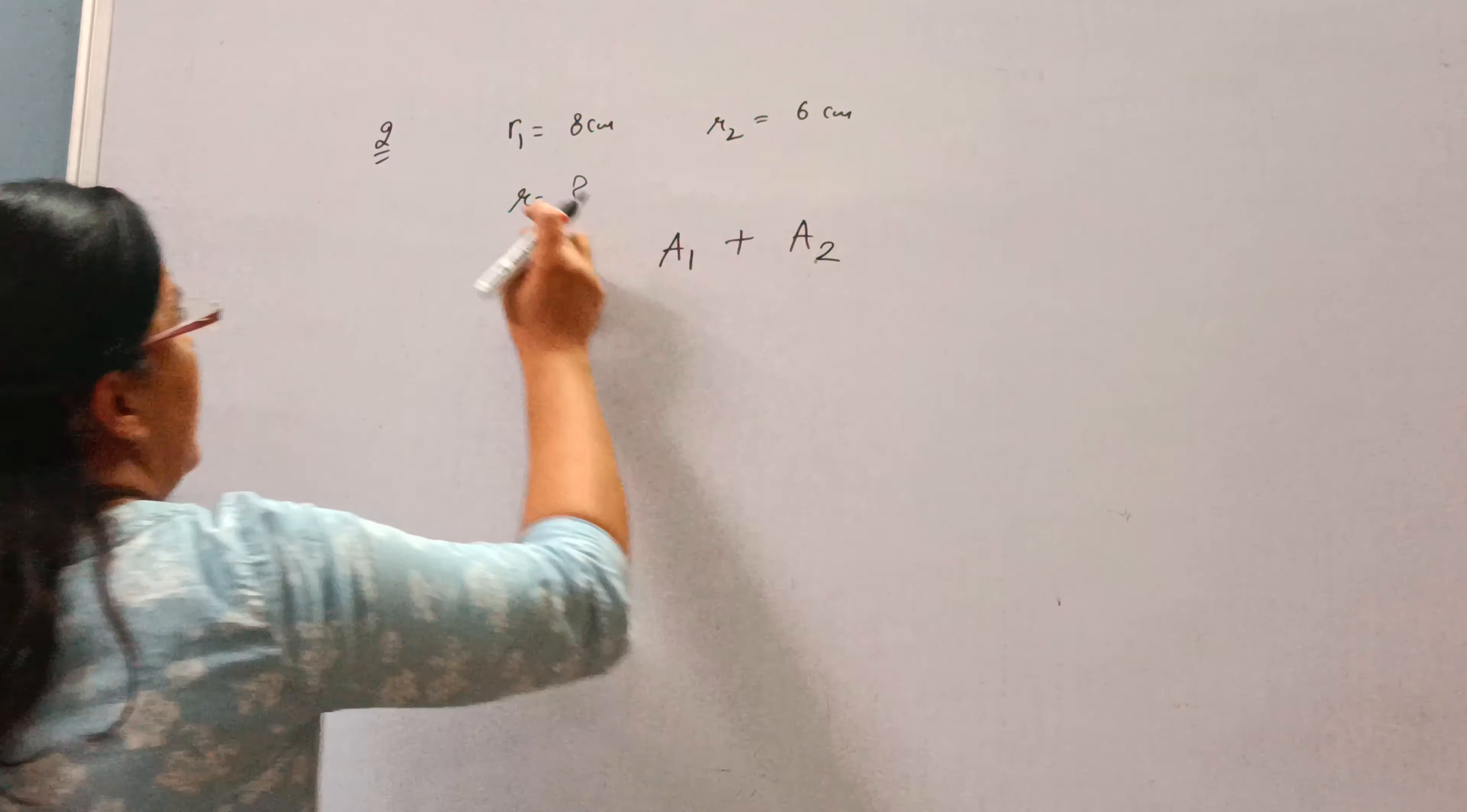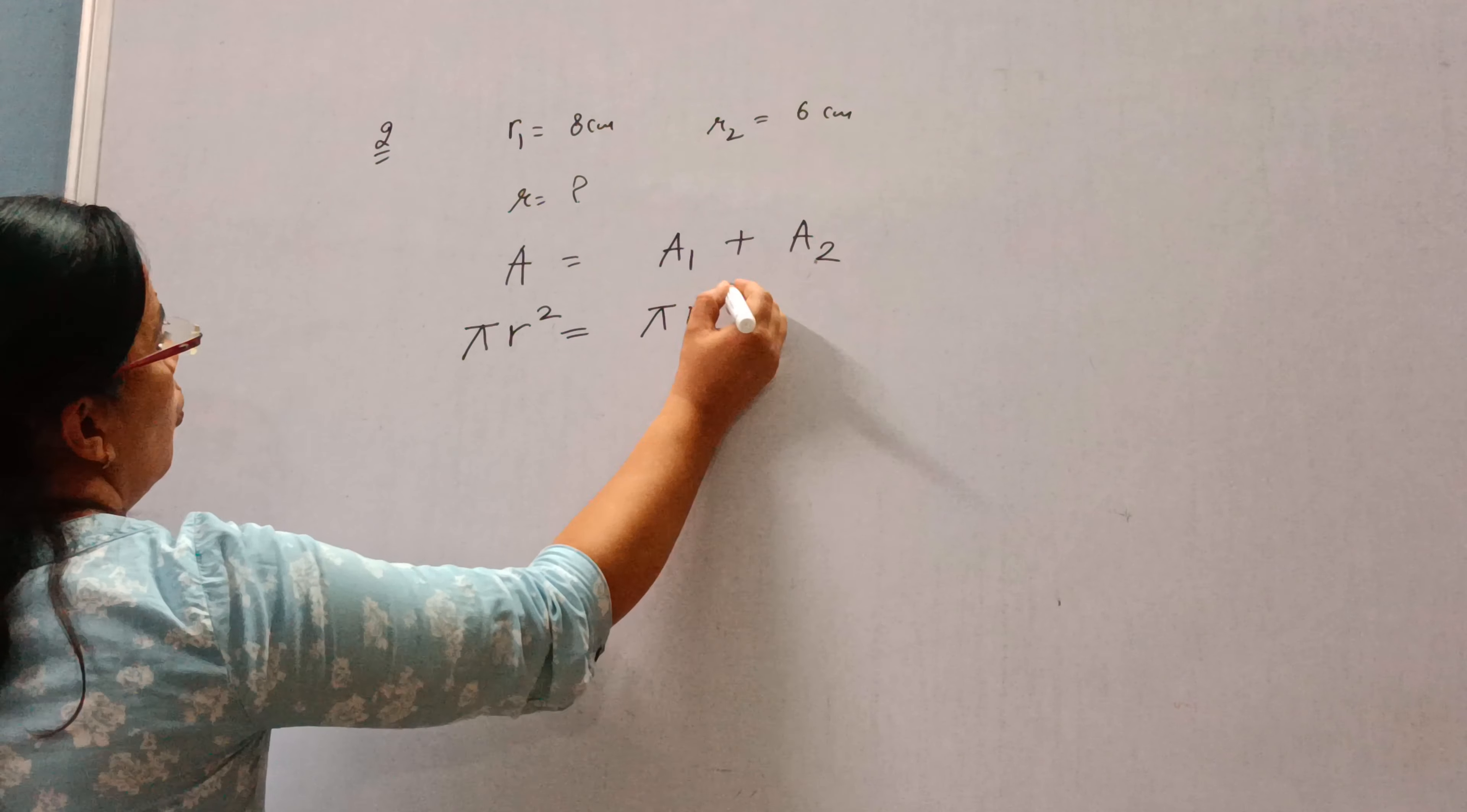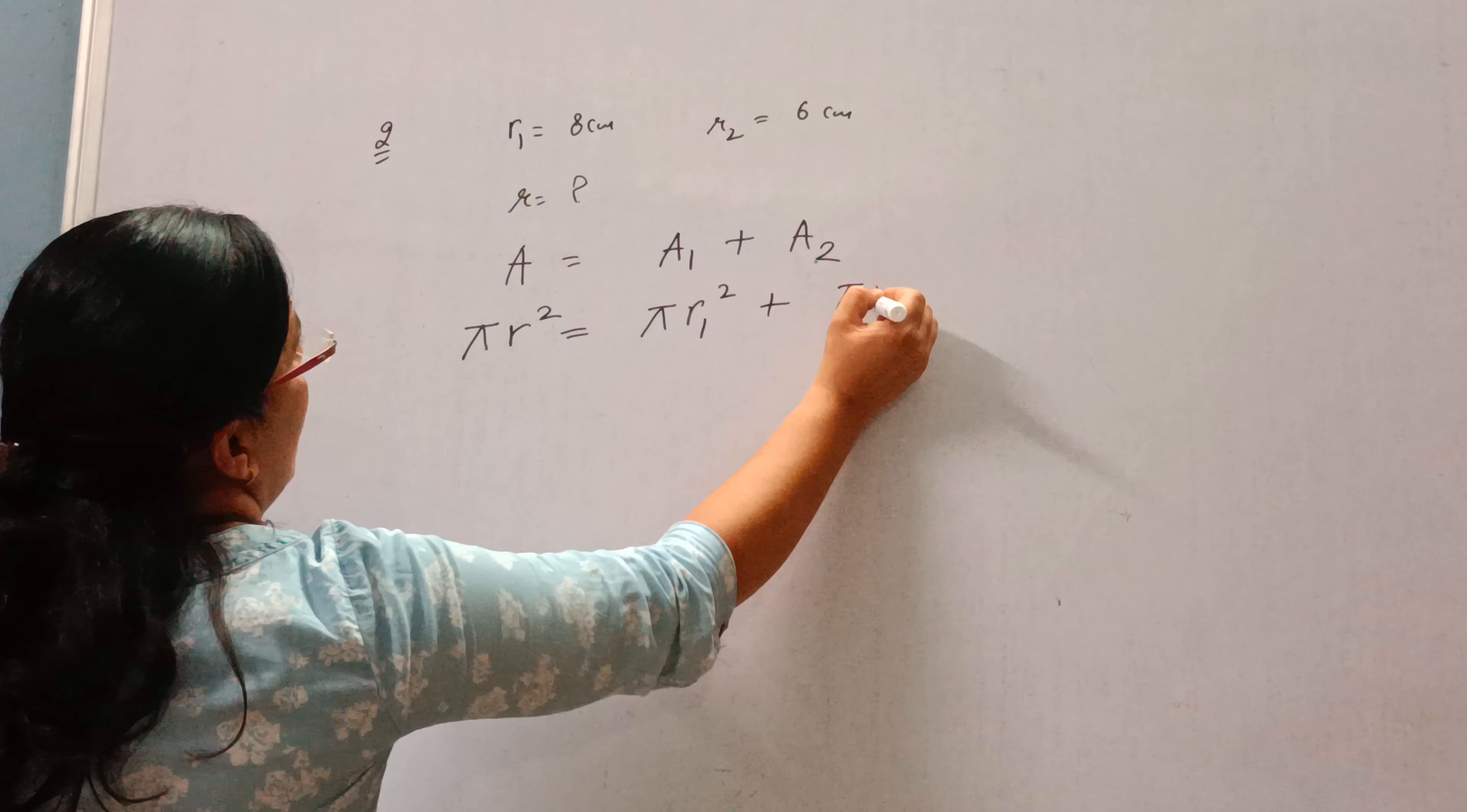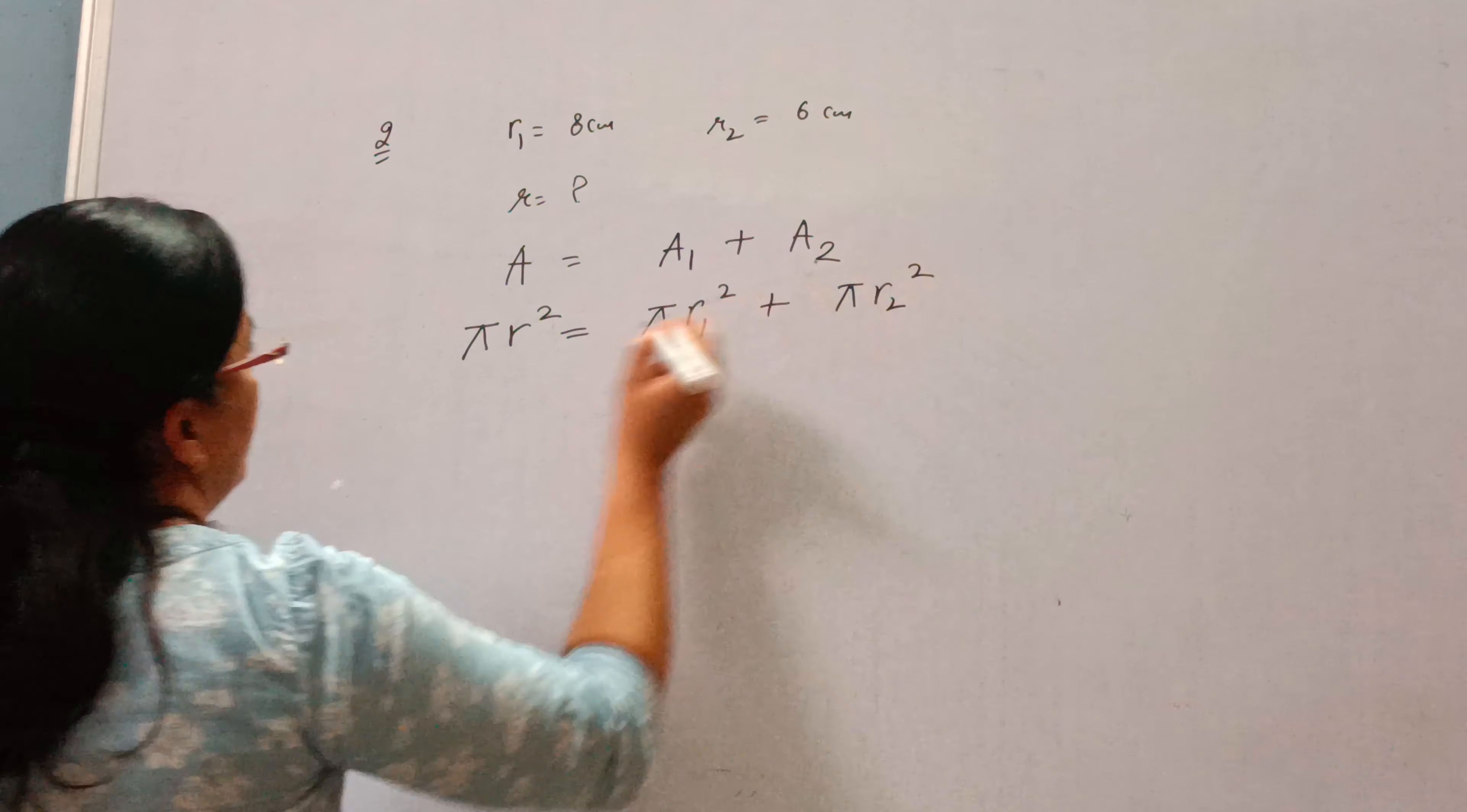So, area will be A1 plus A2, area of this circle. The formula of area is pi R square, it will be pi R1 square and pi R2 square.